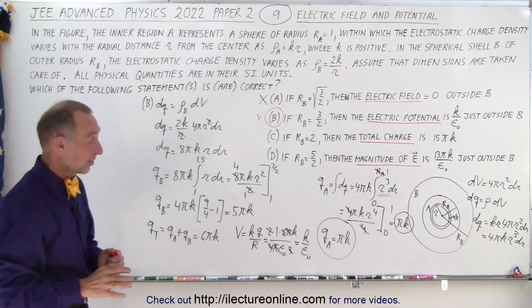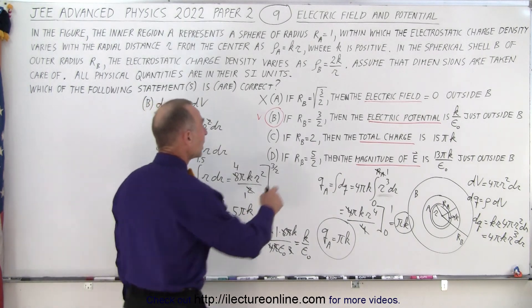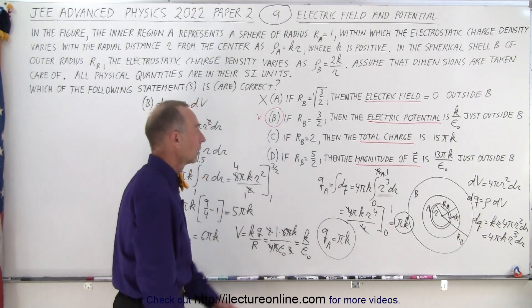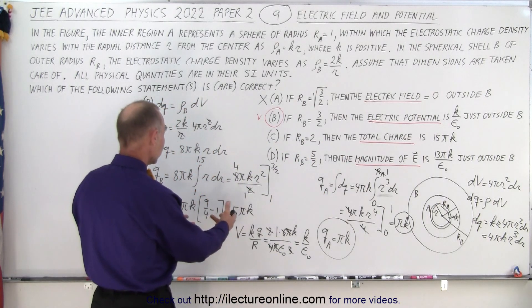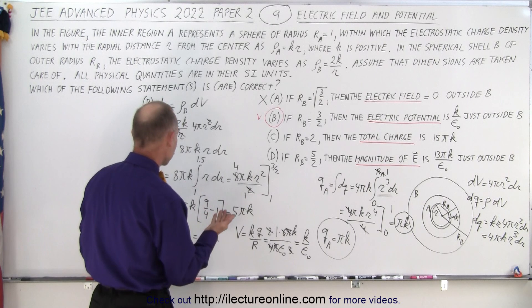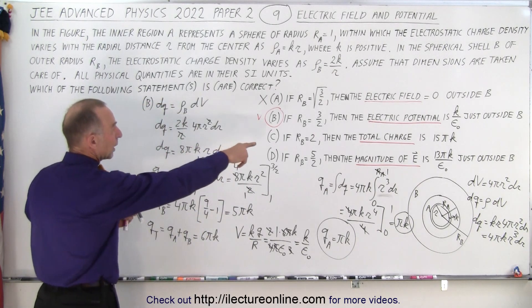You can see why this takes more than 3 minutes to do. Alright, now let's say that radius B is 2. What is the total charge? Now we've already completed the integration, it's right here. So now what we need to do, of course, is we need to evaluate qB when the radius is 2.